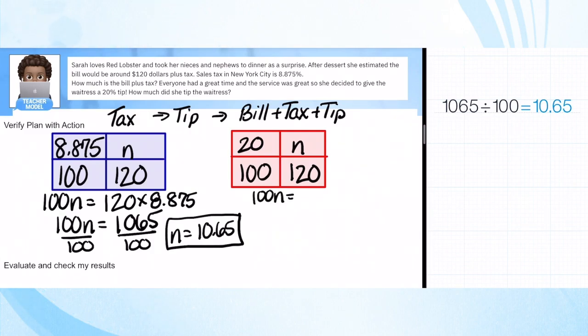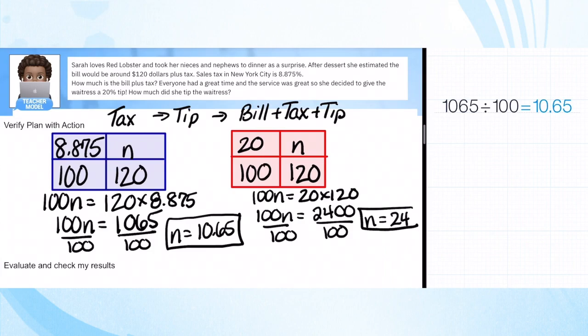We're going to do the same thing for the tip this time. We have 100N is equal to 20 times 120. That one's a little easier to do. So 100N is equal to 24 and two zeros, $2,400. We're going to divide by 100 again, and N is equal to $24. All I did was move my decimal one, two places over to get $24. But if you're still not confident, you can use your calculator and you can see it is $24.